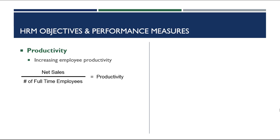We want this productivity number to be very high. The national average is about $206,000, so generating $206,000 per employee is considered solid performance. This is a national average that includes everything from Walmart to small independent boutiques. With productivity, the higher the ratio, the better.